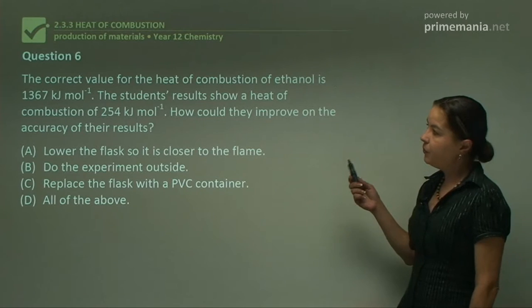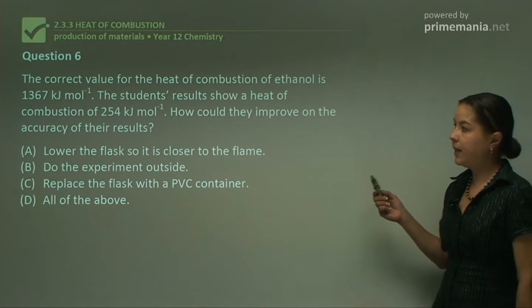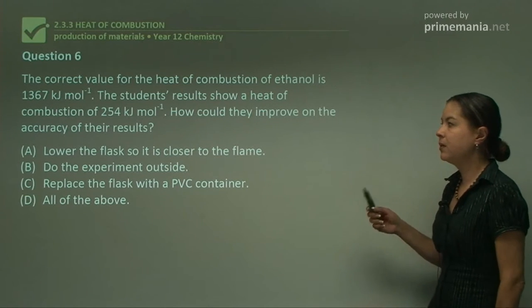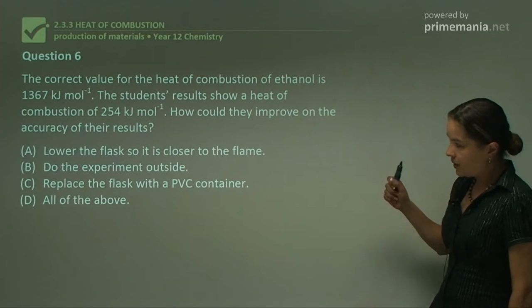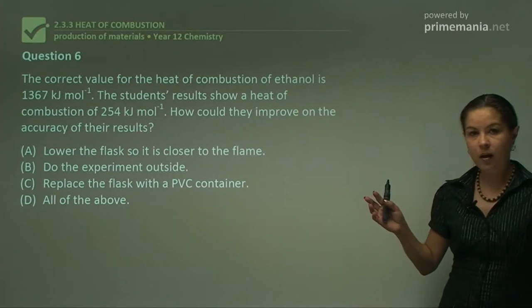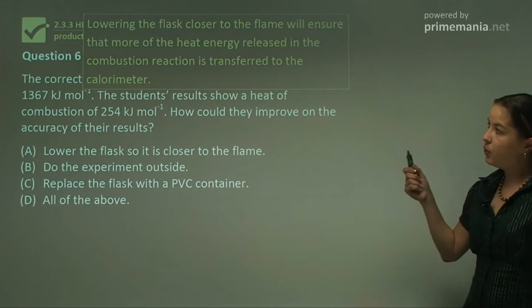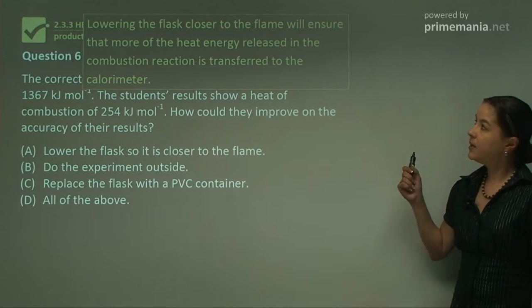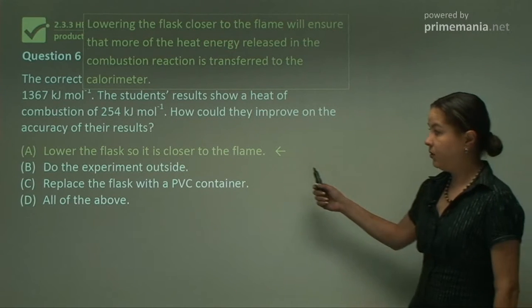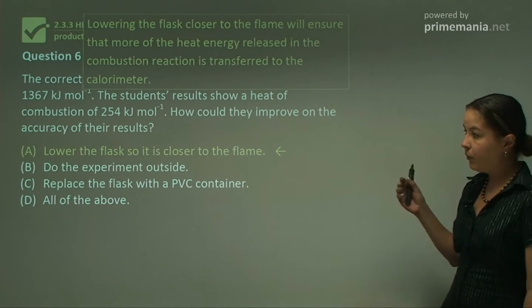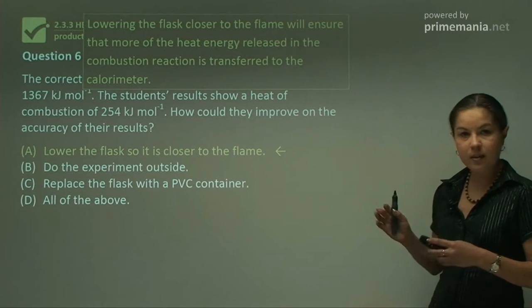Question six: the correct value for the heat of combustion of ethanol is 1367 kJ per mole. The students' results show a heat of combustion of 254 kJ per mole. How could they improve on the accuracy of their results? Now thinking about this, the main reason that probably they've got such a low value is from a draft and inconsistencies in the atmosphere. So lowering the flask closer to the flame would ensure that more of the heat energy released in the combustion reaction is transferred to the calorimeter. So our answer to that one would be to lower the flask. But another way that they could improve the accuracy would be to make sure that they had a really good draft barrier. So perhaps use more than one to stop that draft, because they might be next to a window perhaps that's open.